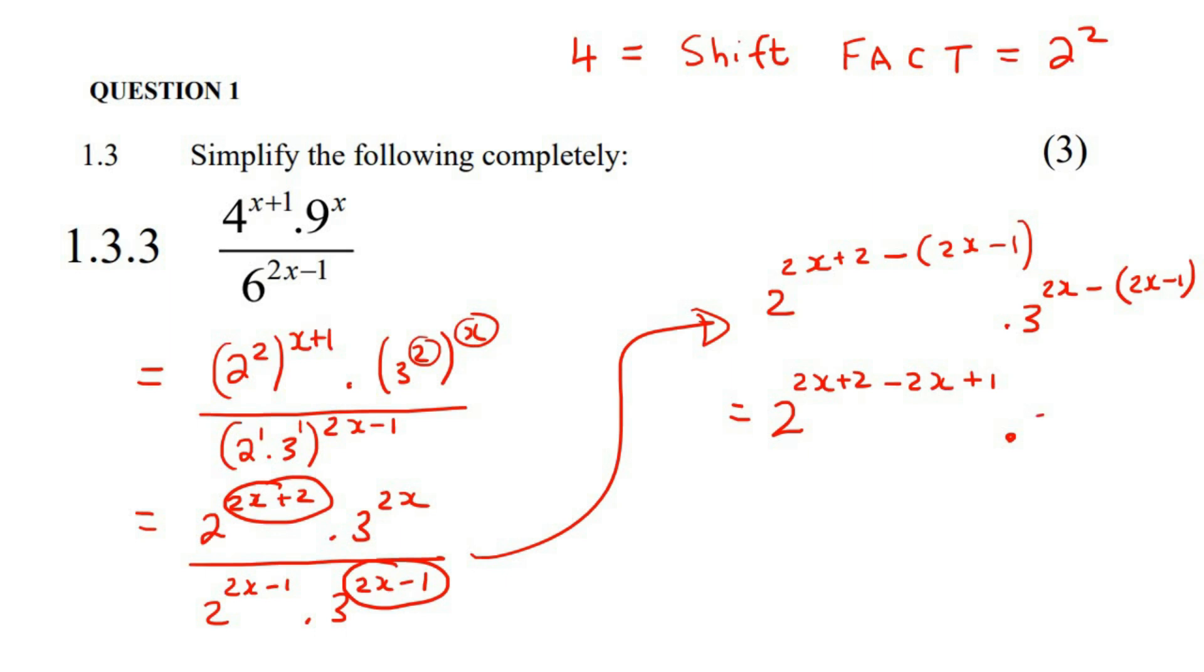So with the 3, we're going to say 2x. Now this minus is going to multiply in, so it's going to become minus 2x plus 1. And so that's going to end up becoming 2 to the power of, now this 2x and this minus 2x, they would cancel out. And then this 2 plus 1 would become a 3. So 2 to the power of 3.